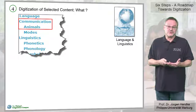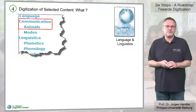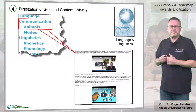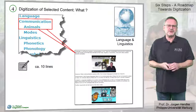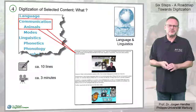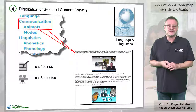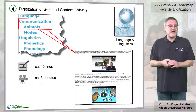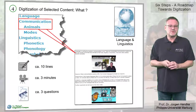So let's digitize that and specify exactly what we need. The result of our digitization process will be a website with roughly 10 lines of written text, one or two short videos — so-called micro lectures — maybe one or two images, and not to forget some questions for a future quiz.